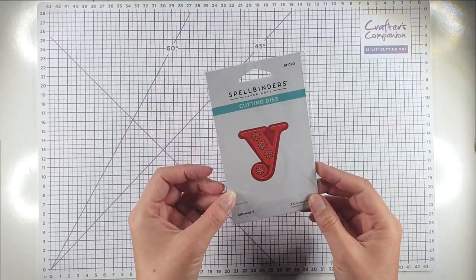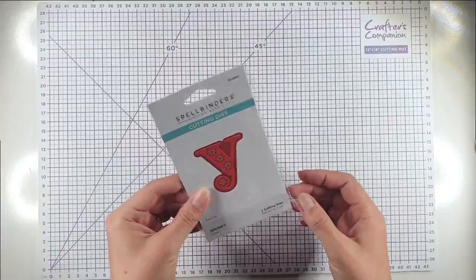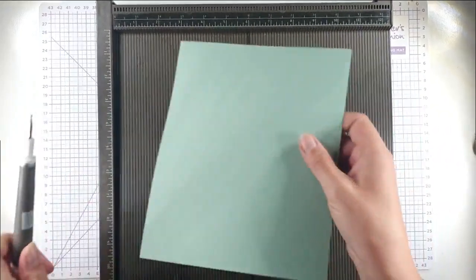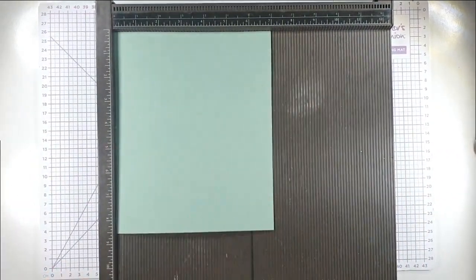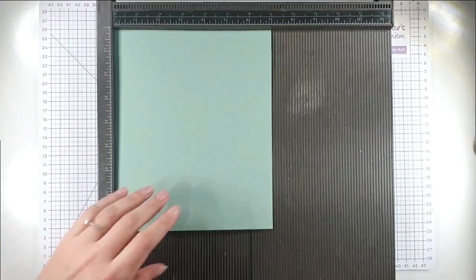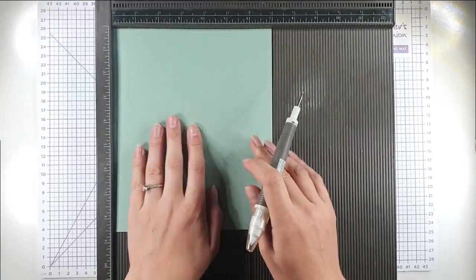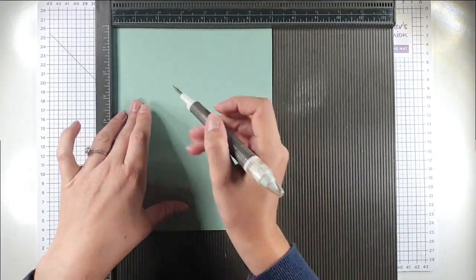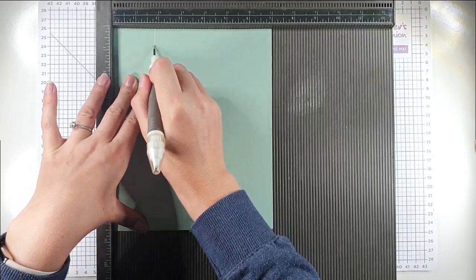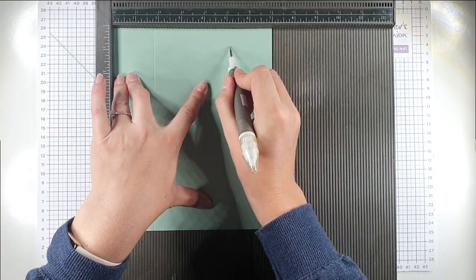So I'm going to be using my stitched alphabet cutting dies from Spellbinders for this. We're going to create the card blank first. I've got a piece of sage cardstock from Spellbinders that measures seven by eight and a half inches, and I'm going to score that at one and three quarter inches and at five and a quarter inches.